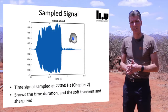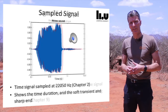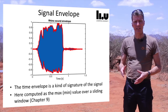Let's have a look at the signal first. It looks quite characteristic: it starts smoothly, lasts for about half a second, and then ends abruptly. If we add the envelope of the signal, we get a characteristic description of the rhino sound. That can be used to distinguish it from other sounds here, like lions or elephants.